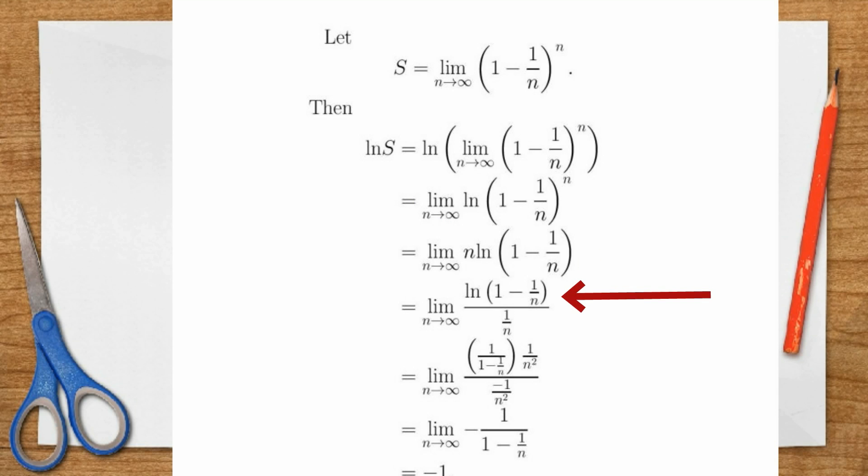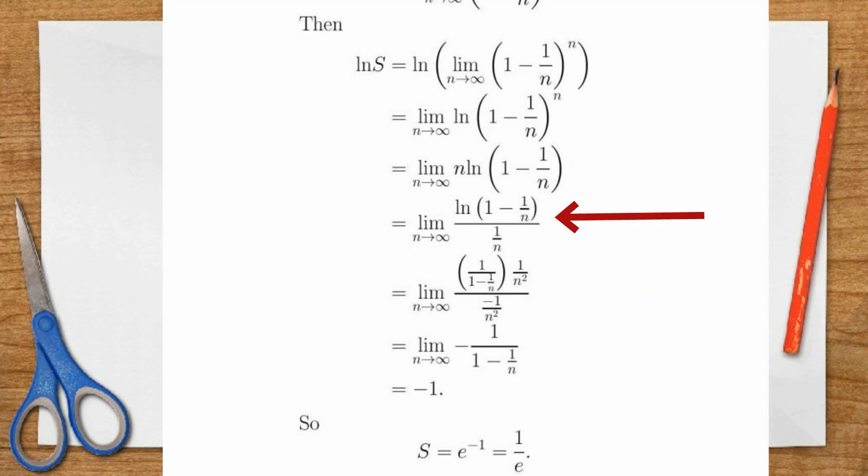So what we can do is divide, instead of multiplying this up here by n, we'll divide by one on n. That doesn't change anything. But now we've got the top and the bottom both going off to zero. And in this case, we can use L'Hopital's rule, which says that we can take the derivative of the top and the bottom. Be careful, examiners love to ask questions about where L'Hopital's rule doesn't apply, but in this case, it does apply. When I take the derivative with respect to n of the numerator and the denominator, I get this expression here, which is equal to negative one. And so what we've said is then that log of s equals negative one, which means that s equals one on e, which is what we wanted to show.